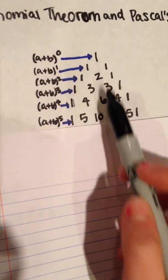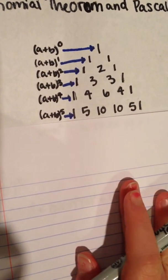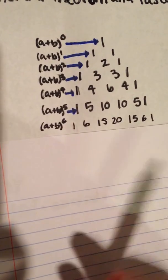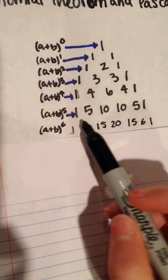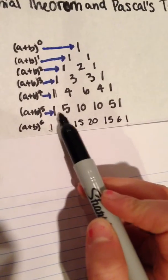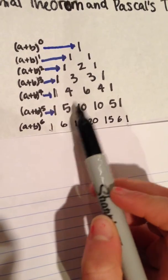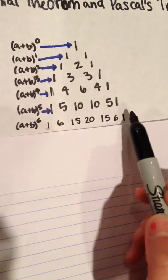There's a clear pattern to this. If you ever need to make another line, say you have a binomial raised to the sixth power, you bookend each end with ones, and then you look to the line above it, seeing that one plus five is six. You put the six here. Five plus ten is fifteen. Put the fifteen here, and so on.